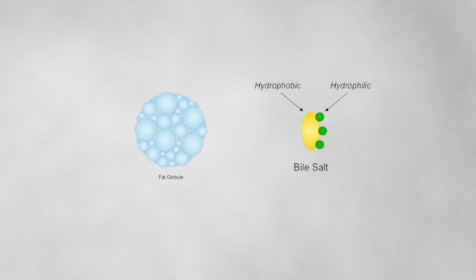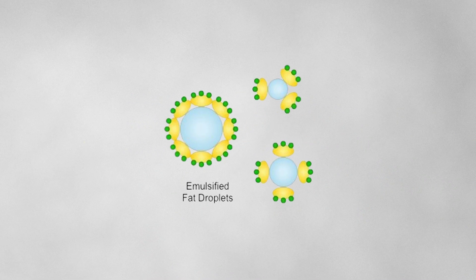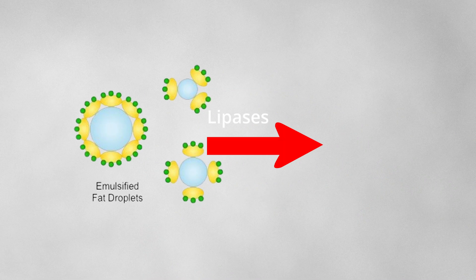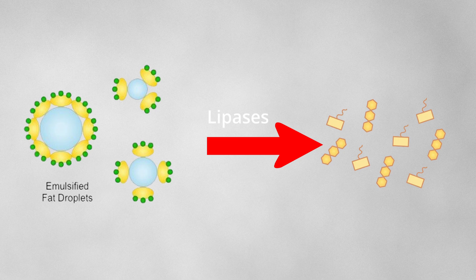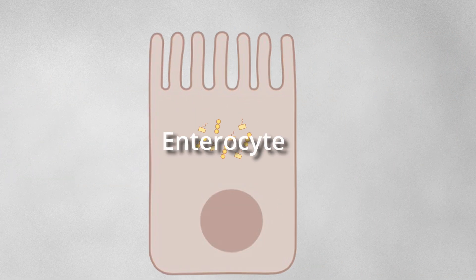Lipids in the digestive tract are emulsified by bile salts. Lipases then break down the lipids, and the products are absorbed into the enterocytes.